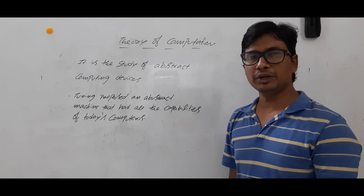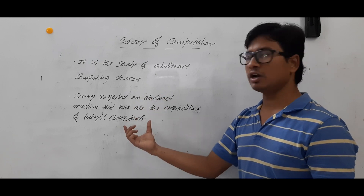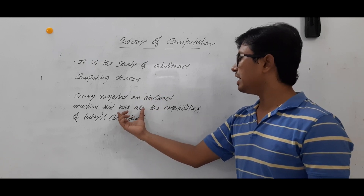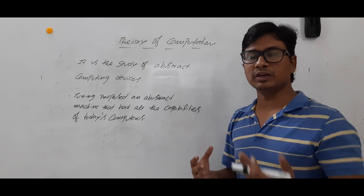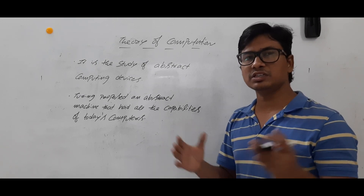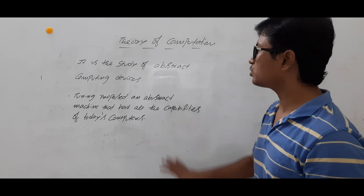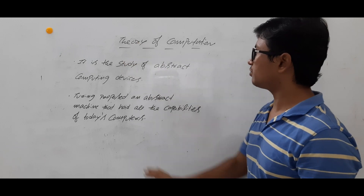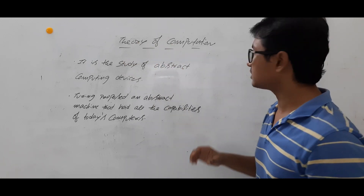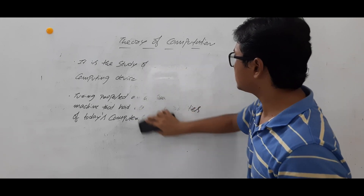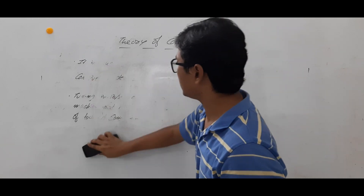Turing proposed an abstract machine that had all the capabilities of today's computers. We call it a Turing machine or Turing model. That machine had the capability to perform addition, replacement, and other basic operations. We will study the theory about them. So I hope you have understood what is meant by theory of computation, why this field came, and what we will study in the entire course.